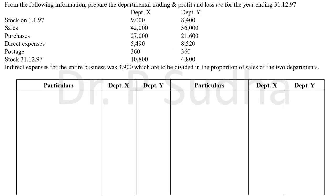The first problem: from the following information, prepare departmental trading and profit and loss account for the year ended 31-12-97. In this question, there are two departments — department X and department Y. The items given are: stock on 1-1-97 (opening stock), sales, purchases, direct expenses, postage, and closing stock. The amounts are given separately for department X and department Y. Indirect expense for the entire business is 3,900, which is to be divided in the proportion of sales — it is a common expense for X and Y.